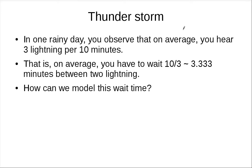In one rainy day, recall this is the same example as the Poisson case. So in one rainy day you observe that on average you hear 3 lightnings per 10 minutes. That is, if you think about the number of events, in the first part we talk about the number of events. So there are 3 lightnings per 10 minutes.